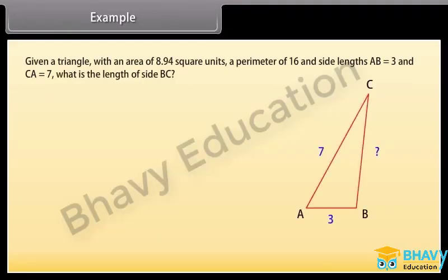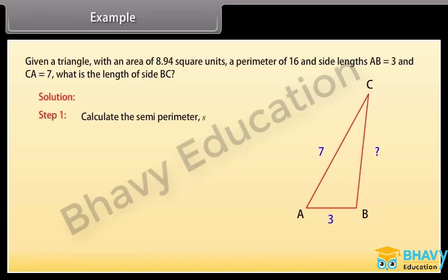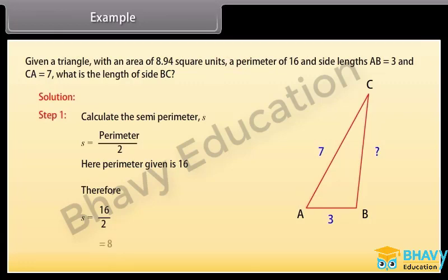Given a triangle with an area of 8.94 square units, a perimeter of 16, and side lengths AB = 3 and CA = 7. What is the length of side BC? Step 1: Calculate the semi-perimeter S = perimeter / 2. Here the perimeter given is 16, therefore S = 16 / 2 = 8.